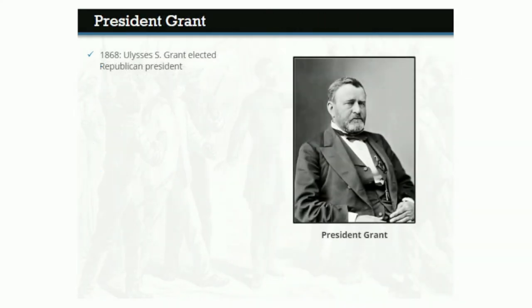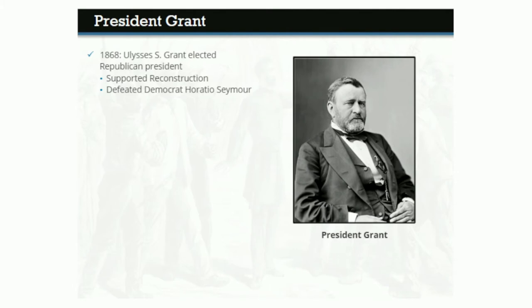In 1868, General Ulysses S. Grant, the greatest Union hero of the Civil War, was elected president as a Republican. He was a supporter of congressional or Radical Reconstruction. Grant defeated Democrat Horatio Seymour, who called Reconstruction unconstitutional and revolutionary. Republicans would enjoy political success for decades after the Civil War by waving the bloody shirt, reminding voters that the Democrats had been the party of secession and rebellion.